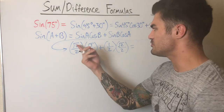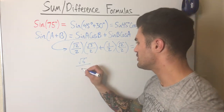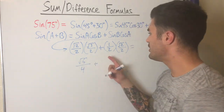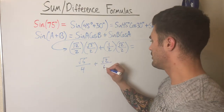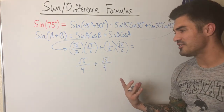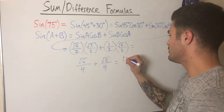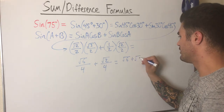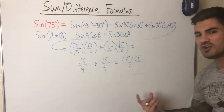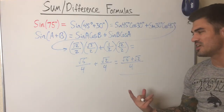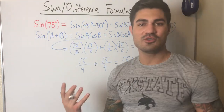Multiplying across: root 2 times root 3 over 2 times 2 gives root 6 over 4, plus 1 times root 2 over 2 times 2 gives root 2 over 4. Combining under one common denominator gives (root 6 + root 2) over 4. That's our final answer — we've evaluated sine of 75 degrees without a calculator.